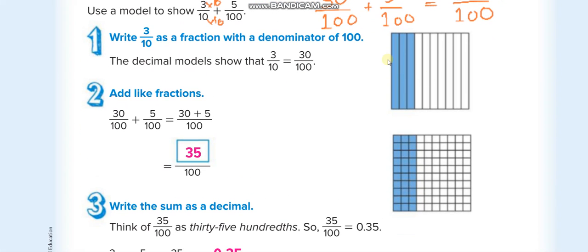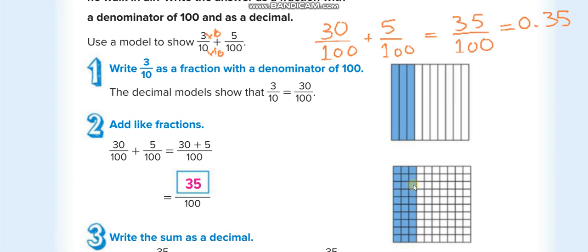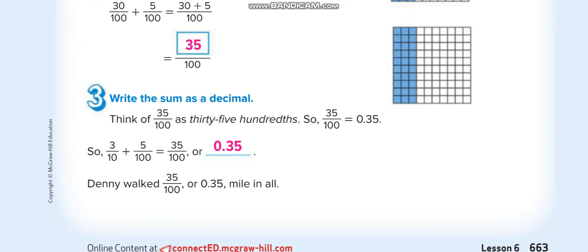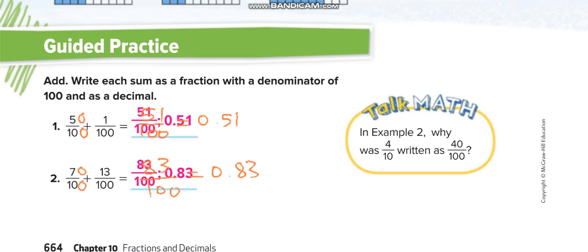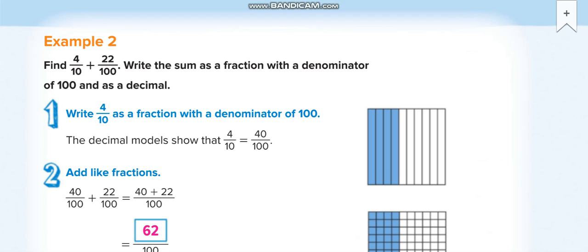Okay, here when we converted 3 over 10 as 30 over 100, multiply by 10 up and 10 down, we get 30 over 100, so the answer is 0.35. Next page - here guys, the same thing, again 10 and 100.